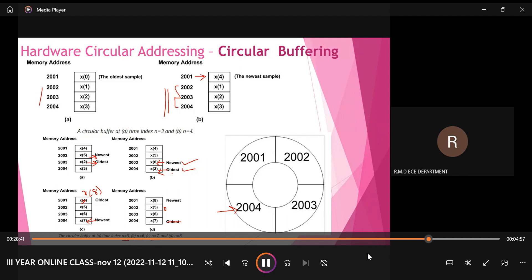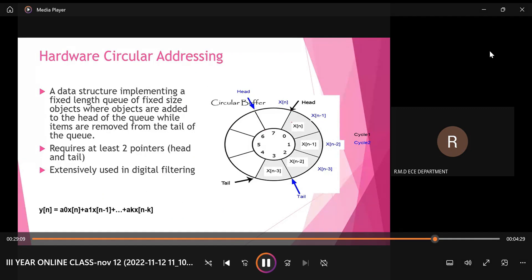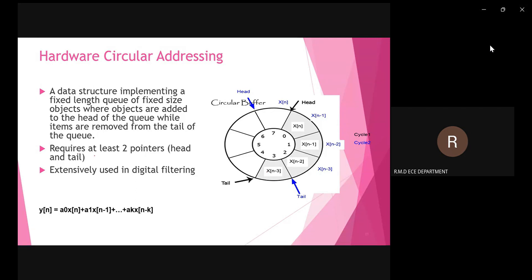There should be two pointers so that for the next time base, the oldest is discarded and the newest is taken into the particular address location. These two pointers can be named head and tail. For any circular shift or circular addressing, there should be at least two pointers to indicate the oldest and the newest sample, named head and tail.